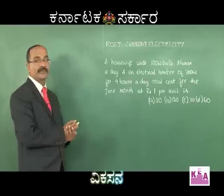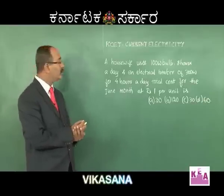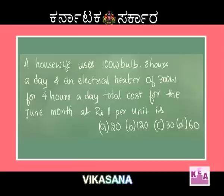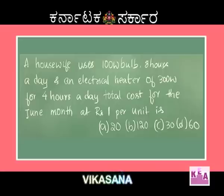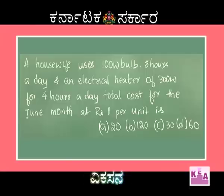Option A: a housewife uses a 100 watt bulb for 8 hours a day and an electrical heater of 300 watt for 4 hours a day. The total cost for the month of June at rupees 1 per unit — option A is 20, option B is 120, option C is 30, and option D is 60.